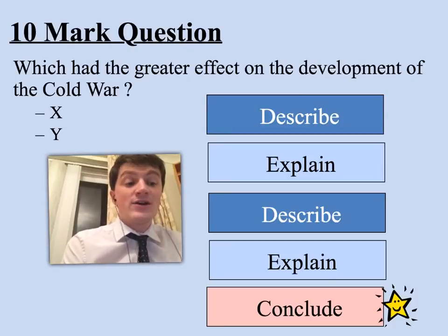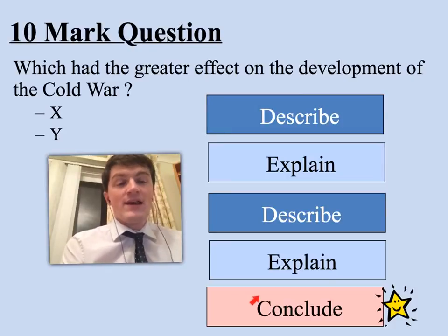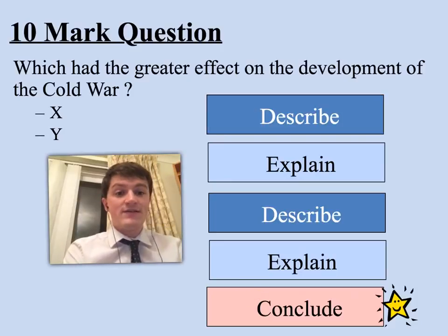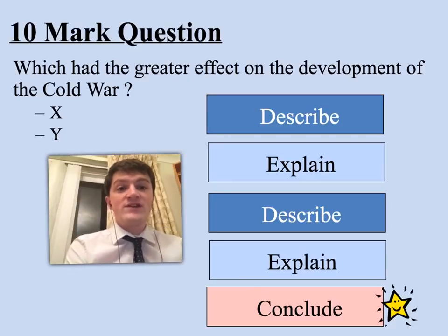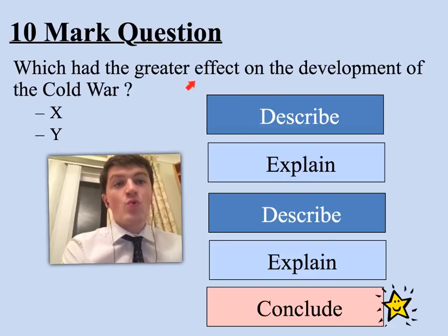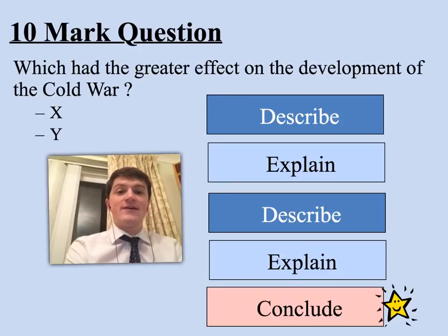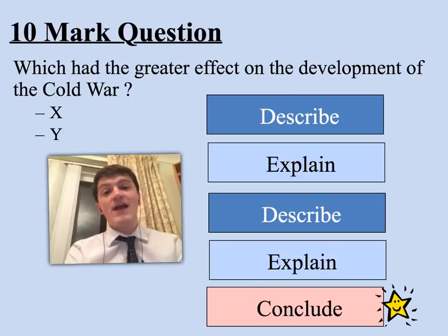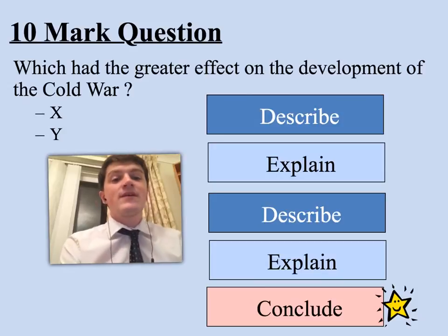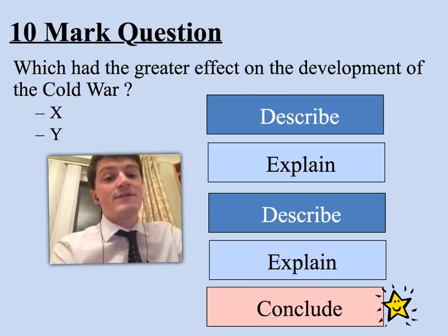Then the conclusion — that's where you really pick up the marks. Discuss both events and say which event did have the greater effect on the development of the Cold War, or which created more tension. Make sure you reach a conclusion and give an answer, to prove to the examiner that you understand history isn't just about telling a story — it's about explaining the significance of events.